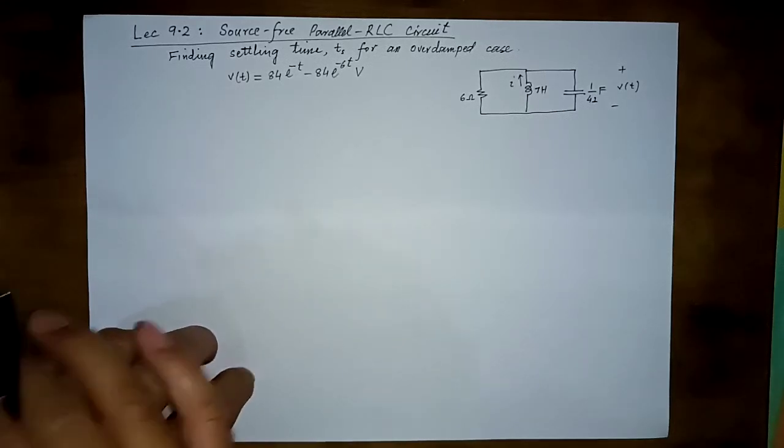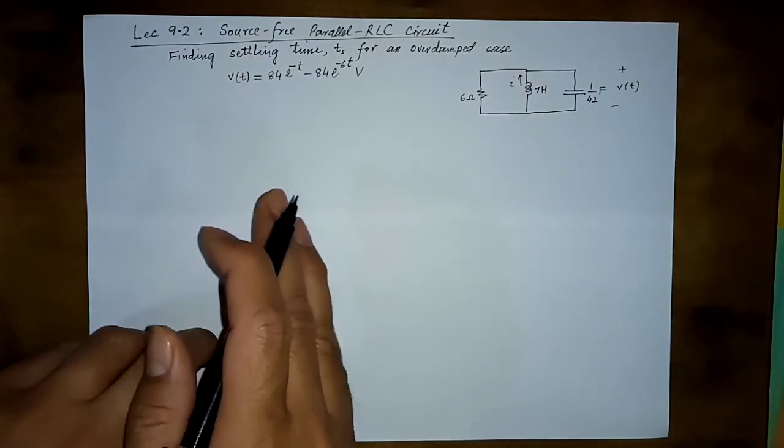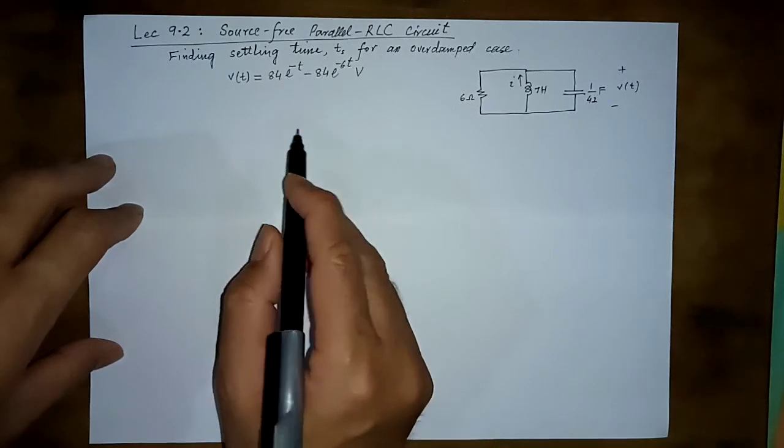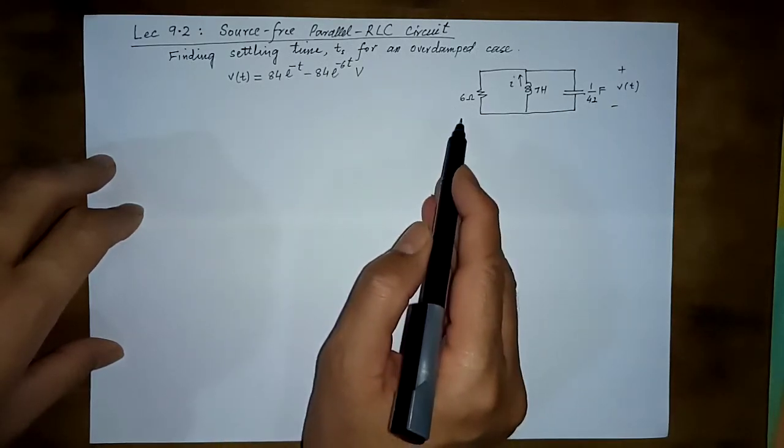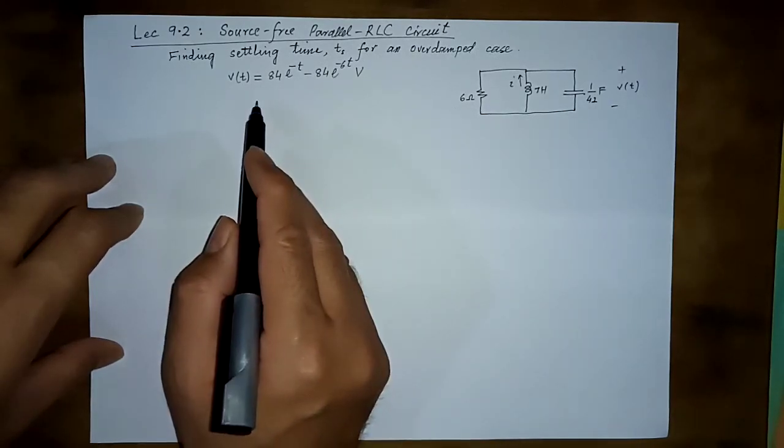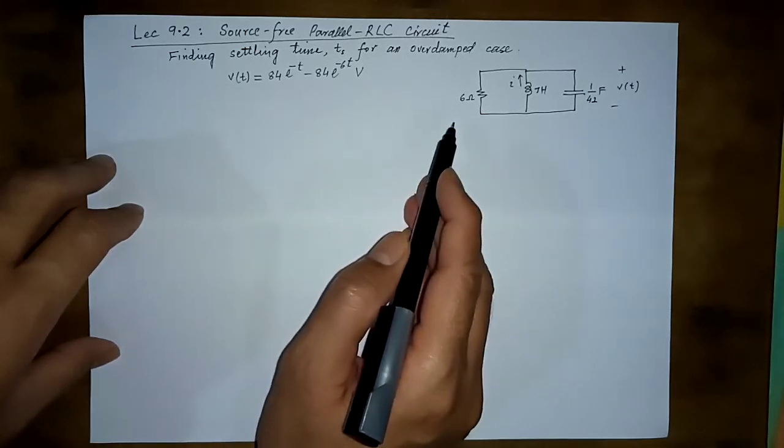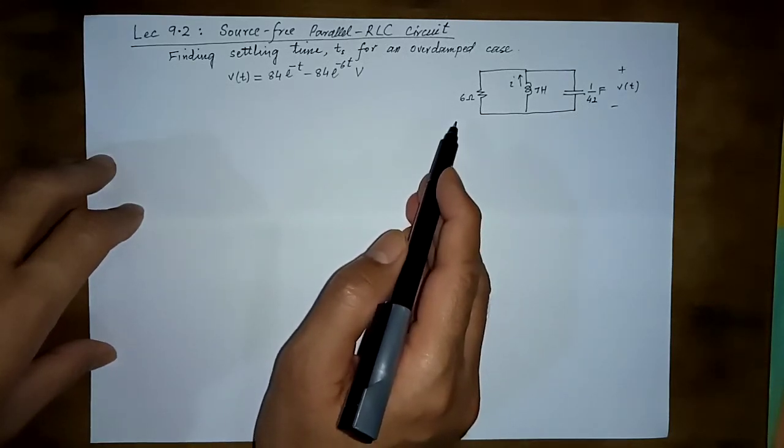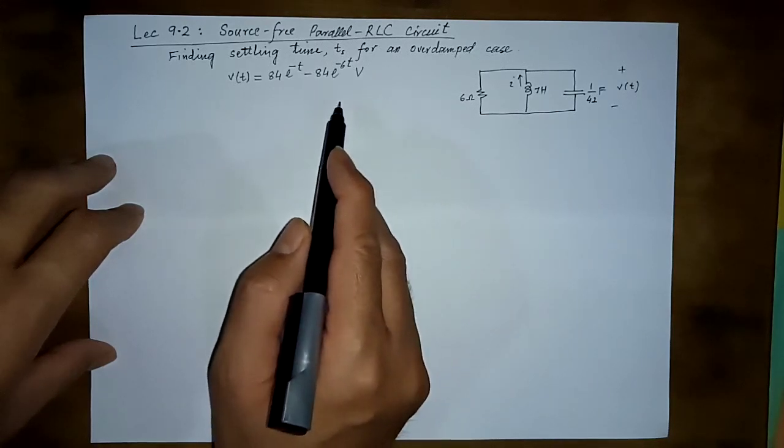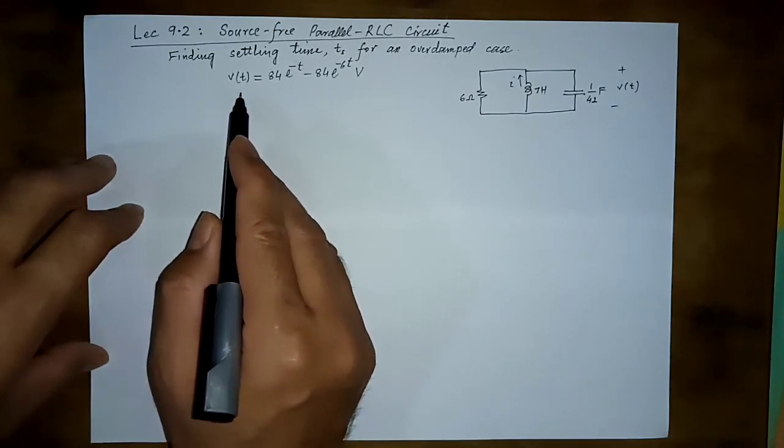Let us now try to find the settling time for this example that we have been studying till now. In a source free parallel RLC circuit, this is a case of overdamped response.